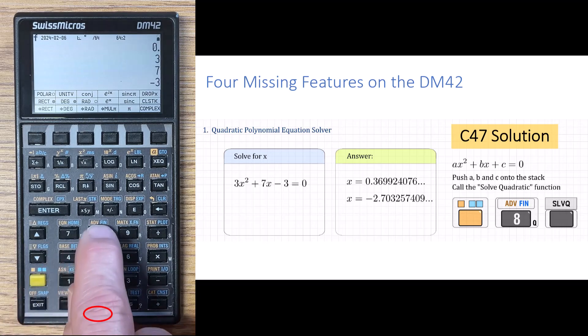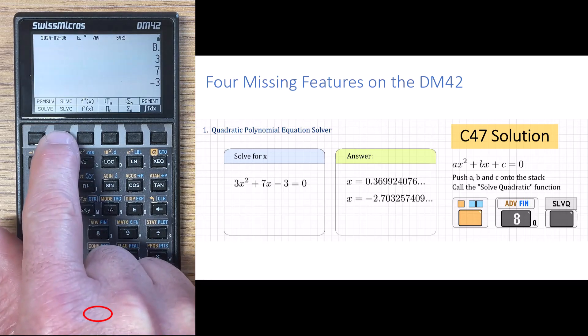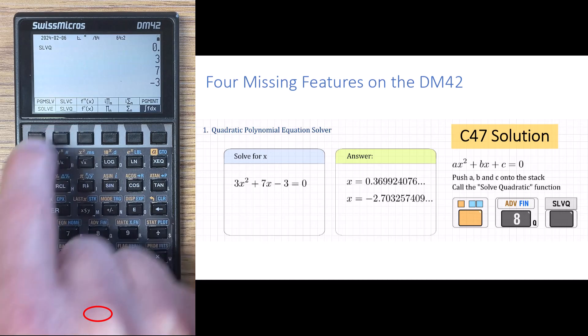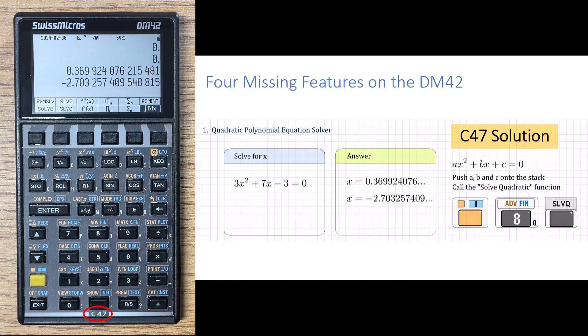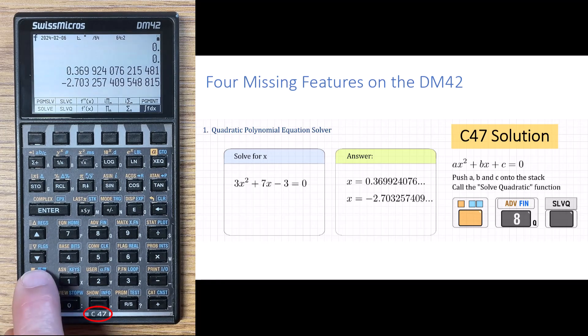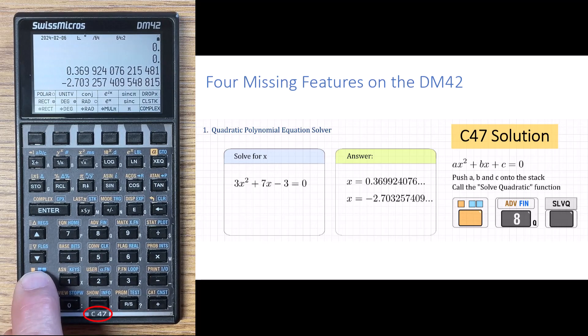Then we go to the advanced menu and on the F2 key, there's a solve quadratic. We press that and we have the answer. So very easy to solve a quadratic equation on the C-47. Let's return to the home menu, clear the stack.